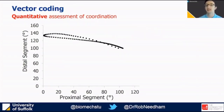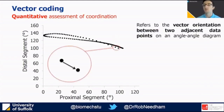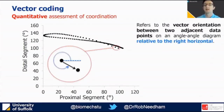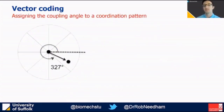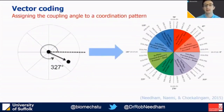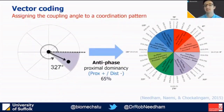We can use vector coding to provide a more quantitative assessment of coordination. Here we use the vector orientation between adjacent time-normalized data points relative to the right horizontal, and the outcome measure is referred to as the coupling angle. We can map that coupling angle onto a coordination pattern classification, giving for example antiphase proximal dominancy of 65%.